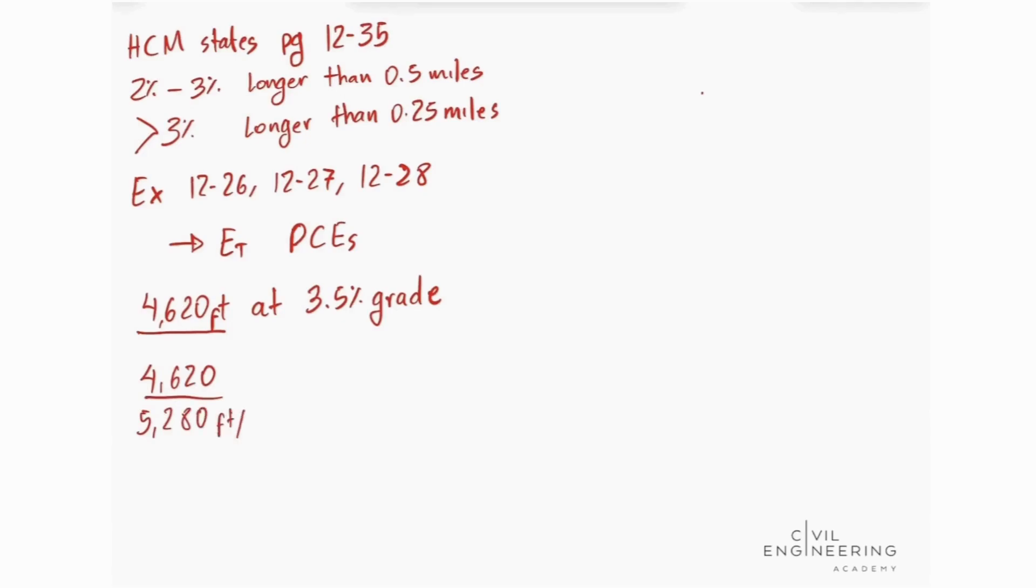And this is feet per mile. So we got that this is 0.875 miles. And we can see that 0.875 is greater than 0.25.